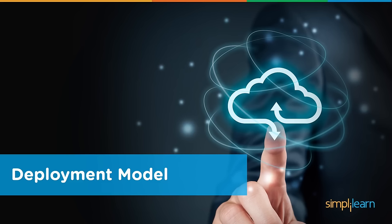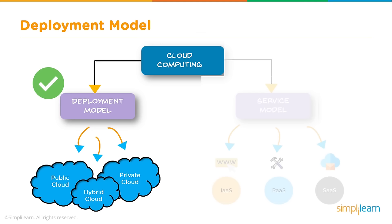Let's talk about the deployment model first. The deployment model is categorized into three types: public cloud, private cloud, and hybrid cloud.